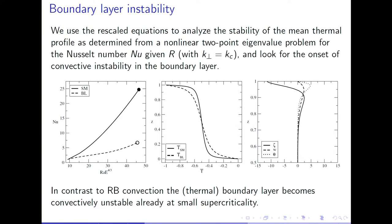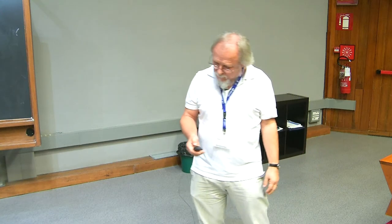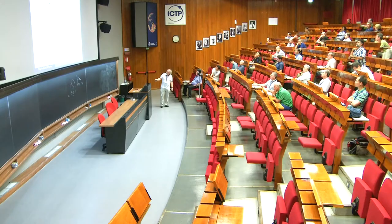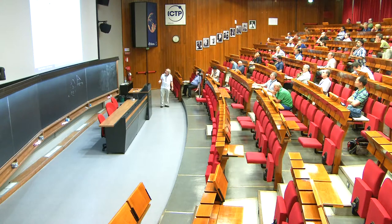The boundary layers are important because when I increase the Rayleigh number, they first lose stability when I'm still not very close to isothermal in the core. The boundary layers become unstable here and here in the temperature profile, but the core is actually stable when the Rayleigh number is large — very opposite to standard non-rotating Rayleigh-Bénard convection. This just shows the eigenmodes of the boundary layer instability to convince you that really happens.